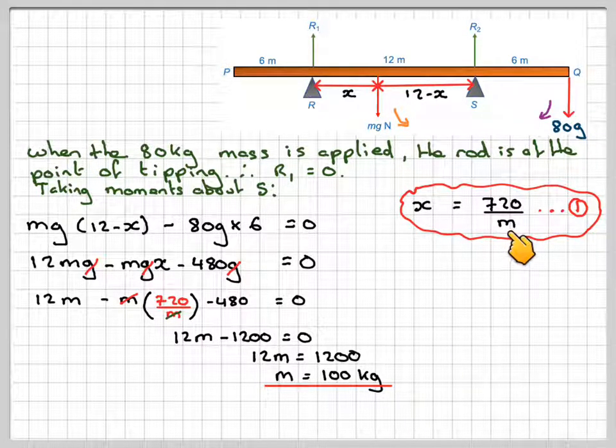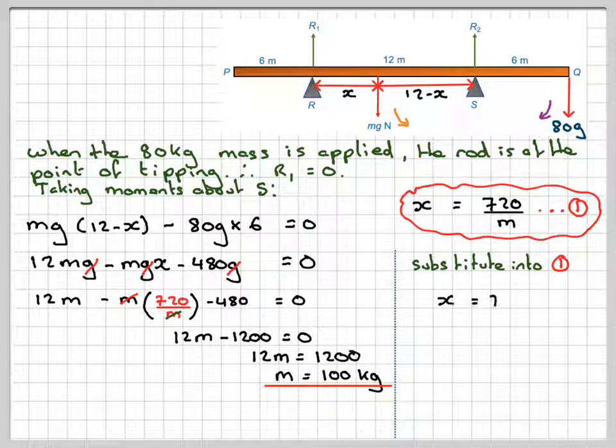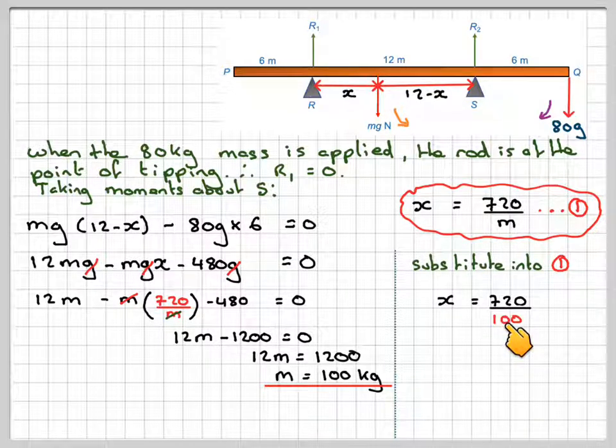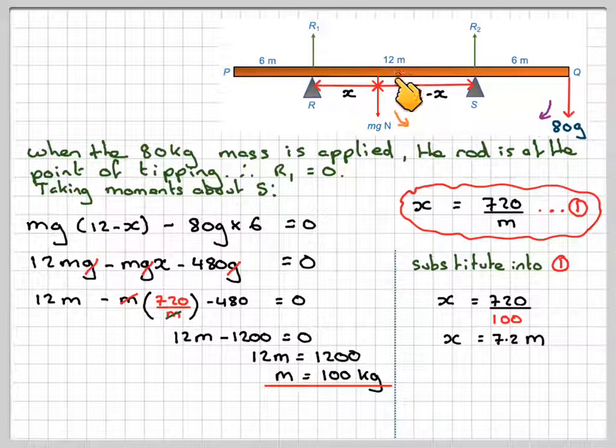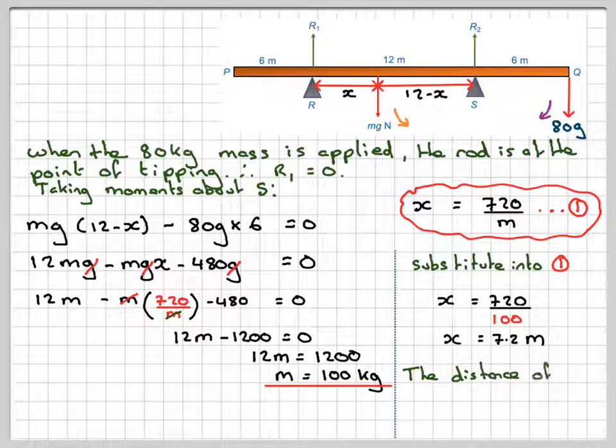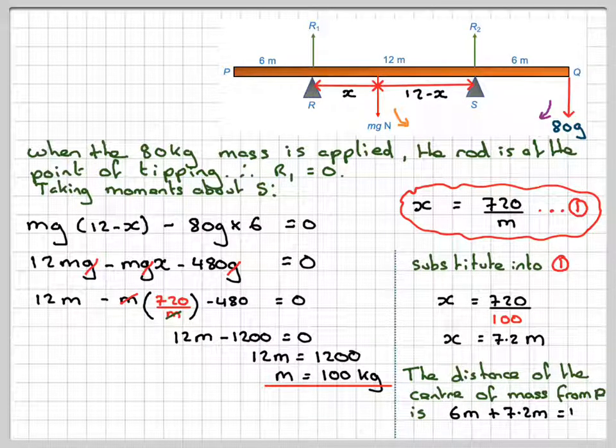Doing that, we can substitute back in here and find the value of X. Substitute into equation 1. So X will be 720 over 100. So X will be 7.2. If we should have drawn it, it should actually be more over to this side of the center point. And therefore, the distance of the center of mass from the point P will be 6 plus X. So that will be 6 plus 7.2 meters, which gives me 13.2 meters. So the mass of the rod is 100 kilograms, and its center of mass will be 13.2 meters from P.